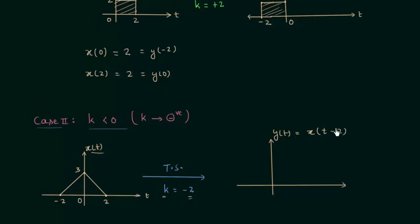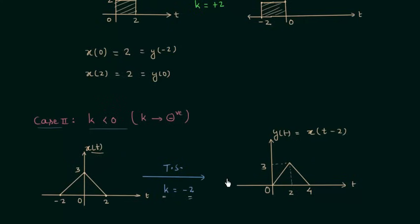In this case we are subtracting 2 seconds from the instantaneous time, so we will get everything 2 seconds later. The waveform will look like this: when time t is equal to 0, y(t) is equal to 0; when time t is equal to 2, y(t) is equal to 3; when time t is equal to 4, y(t) is equal to 0. Comparing the original signal with the new signal, the whole waveform is shifted to the right. So case number 2, when k is less than 0, is the case of right shifting, or we can say time delay.